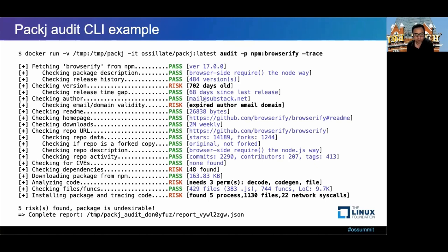Then it checks the author and author email. In this case, the author email domain has expired, so it could potentially be taken over by an attacker — this is flagged as a risk. Finally, it checks other metadata attributes such as readme and homepage. Then it checks provenance, looking for public availability of the source code repo. It found one on GitHub with over 14,000 stars and over 1,200 forks, and the repo is original, not a fork.